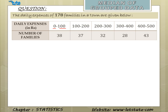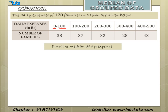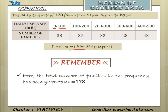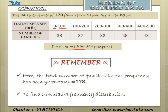We need to find the median daily expense of all these families. Before we do that, we need to keep certain things in mind. First, we have been provided with the frequency — that is, the total number of families, which is 178. We will also find something called cumulative frequency distribution, which will help us find the median of this grouped data.